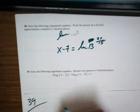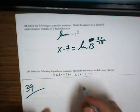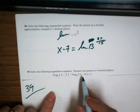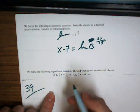Number 39, we want to take log base 9 of x minus 2 minus log base 9 of x minus 4. If you subtract, remember you can condense it with division.